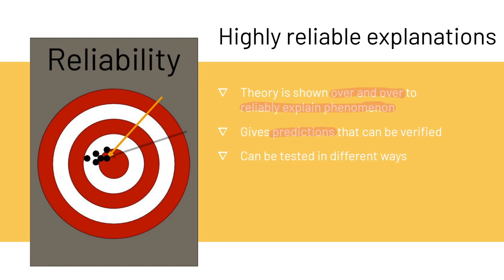Hypotheses and theories can be tested in different ways. The theory of evolution, for example, has lots of lines of evidence — lots of different tests showing that evolution is accurate.